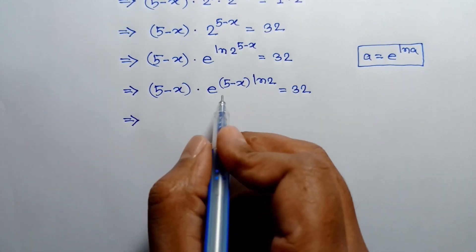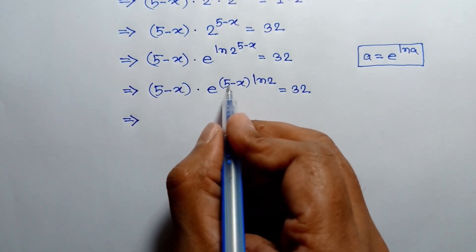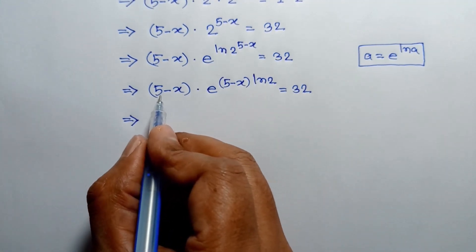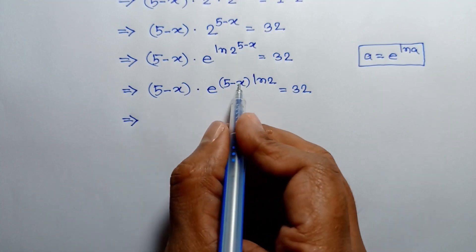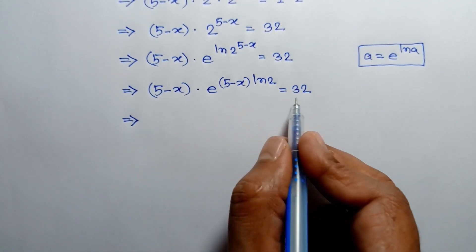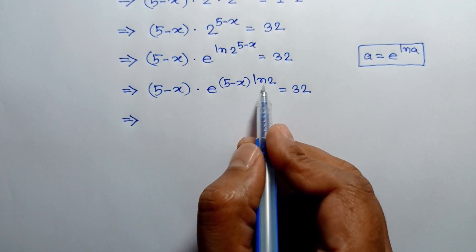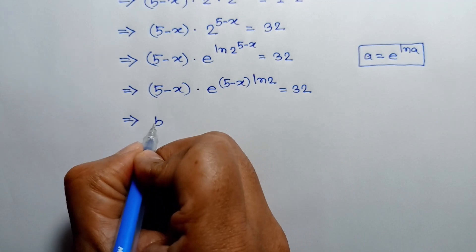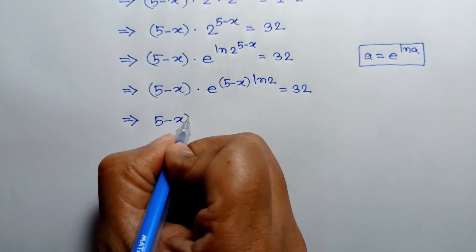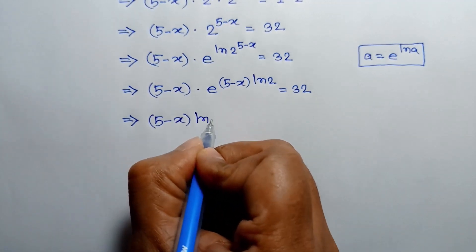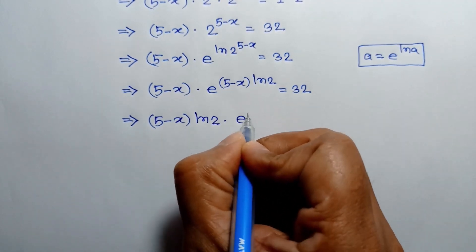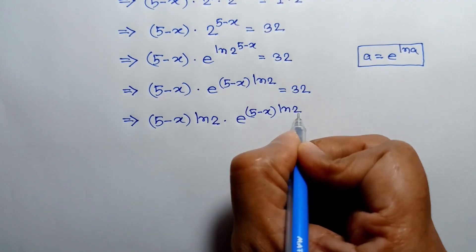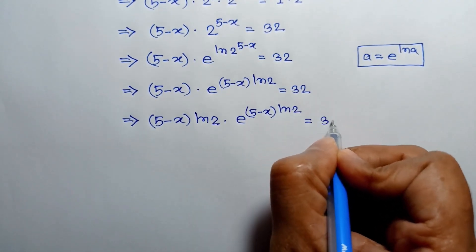The power of e is (5 minus x) ln 2 and the coefficient is also (5 minus x). To make the power and coefficient the same, we multiply both sides by ln 2. Multiplying both sides by ln 2, we can write (5 minus x) ln 2 times e to the power (5 minus x) ln 2 is equal to 32 ln 2.